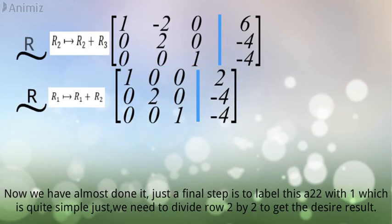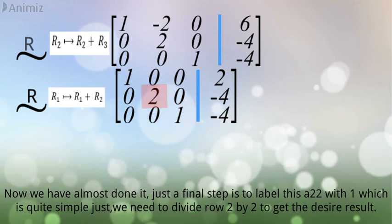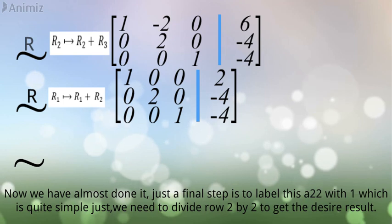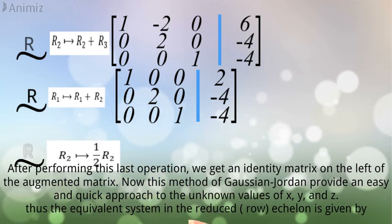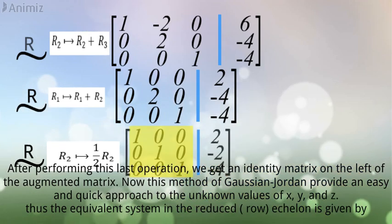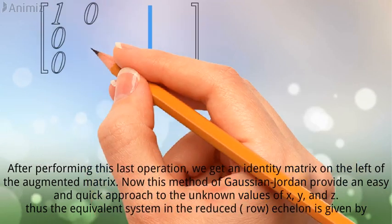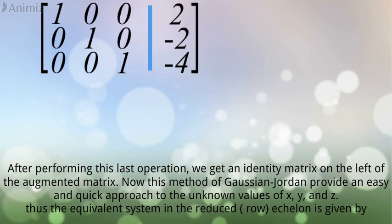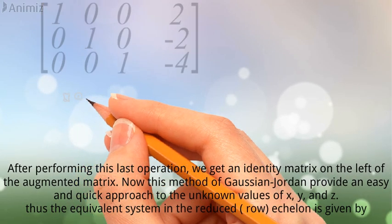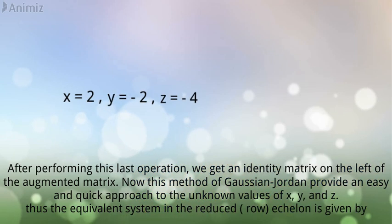Just a final step is to label this A2 2 with 1 which is quite simple just, we need to divide row 2 by 2 to get the desired result. After performing this last operation, we get an identity matrix on the left of the augmented matrix. Now this method of Gauss and Jordan provide an easy and quick approach to the unknown values of X, Y, and Z. Thus the equivalent system in the reduced row echelon is given by, thus the solution set is given by x equals 2, y equals negative 2, and z equals negative 4.